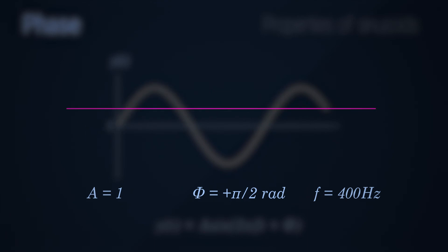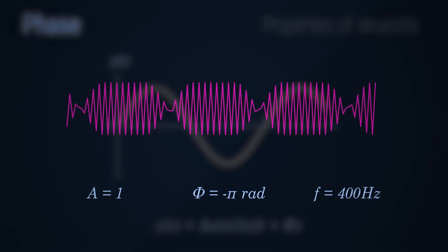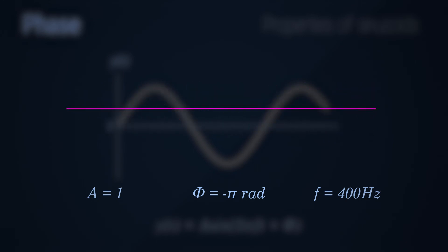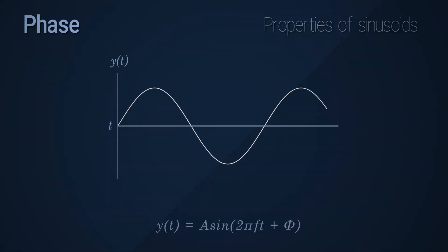Now here's one with a phase offset of negative pi radian. Did you notice the difference? Well there isn't one.